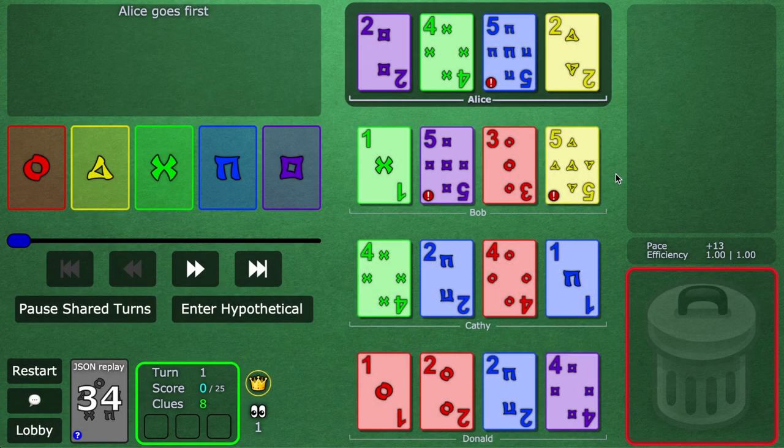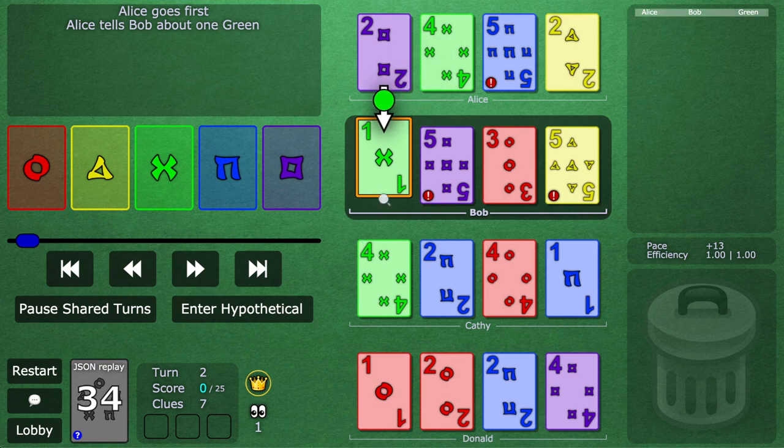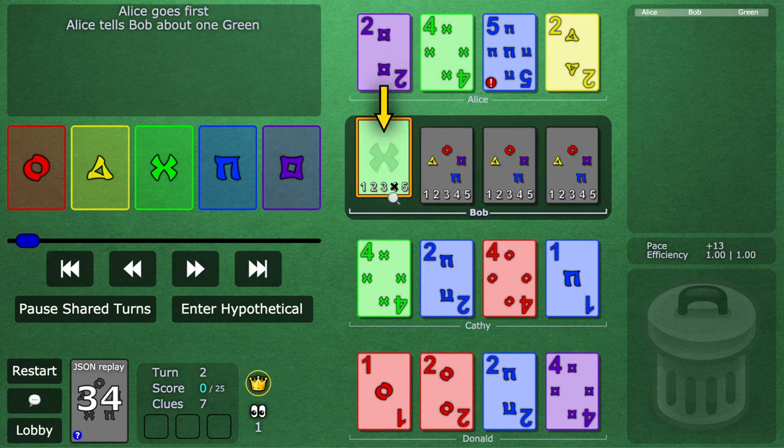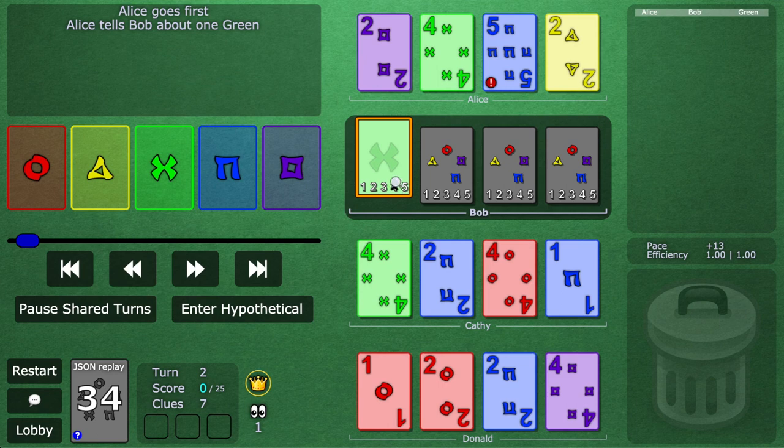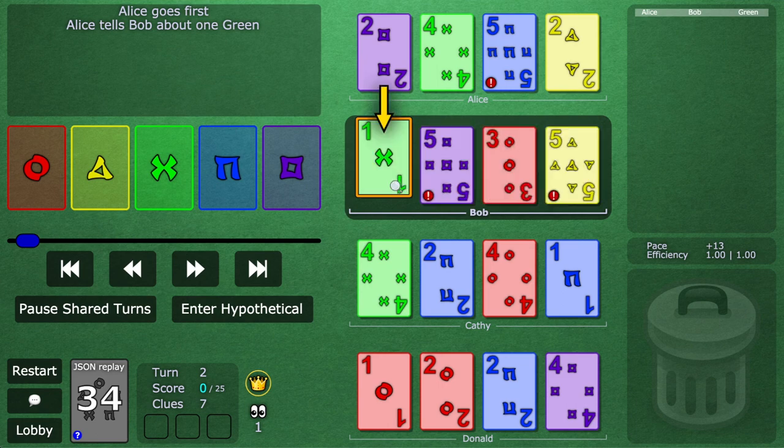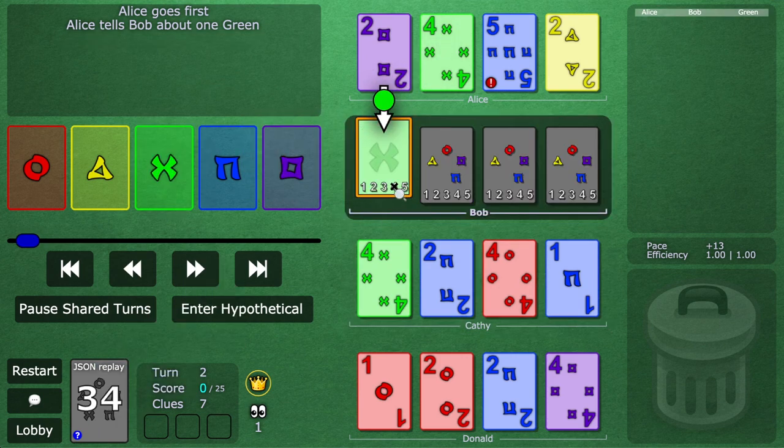All right so the first clue of the game, Alice wants to get this green one played. So Alice clues green. You might think well heck, Bob knows it's a green card but what should make him think it's exactly a green one? Well actually it follows from that principle we just talked about. Because Bob knows that Alice's clue must be getting a card played, he actually knows that this must be exactly green one, right? Because if it wasn't, why would Alice be cluing it?